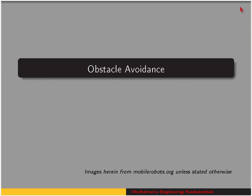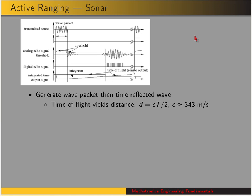A mobile robot needs to be able to perform obstacle avoidance because there will be unforeseen roadblocks along the way from a start position to a goal position. In order to determine if there are objects there, the robot needs some exteroceptive sensors, meaning sensors that can determine something about the outside world.